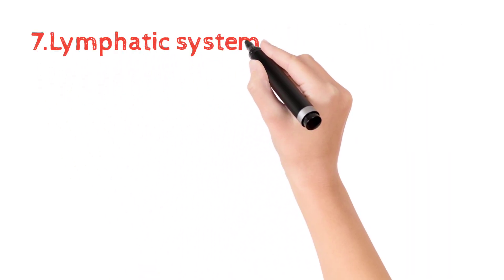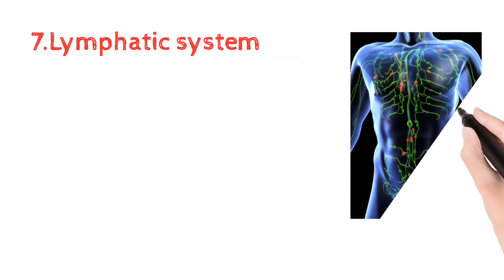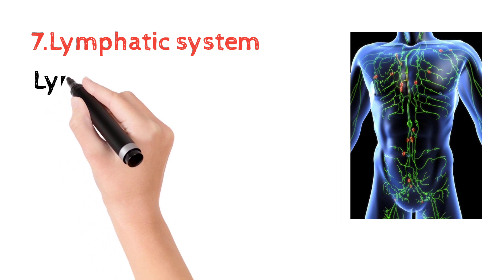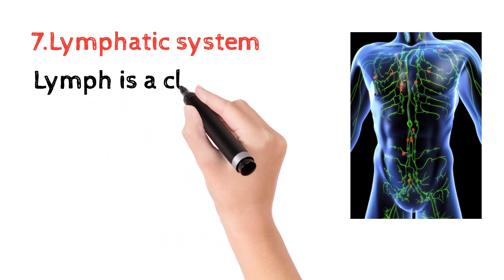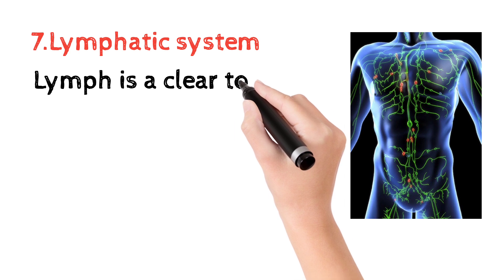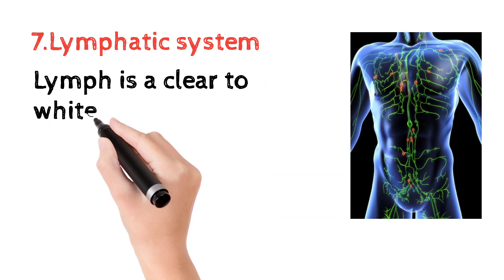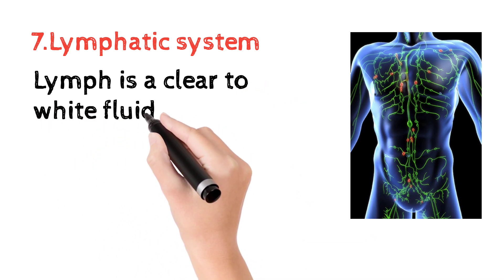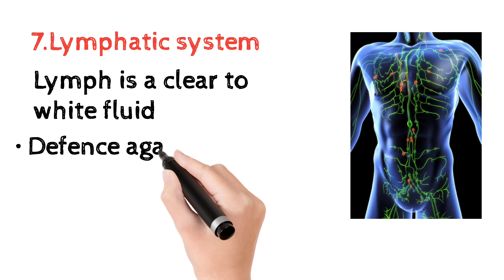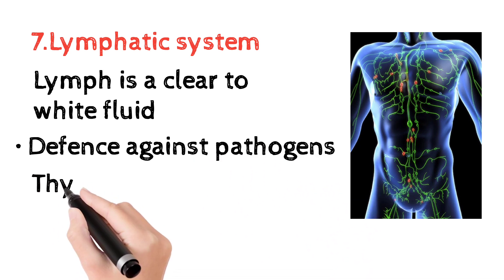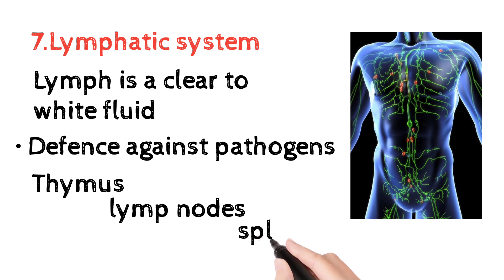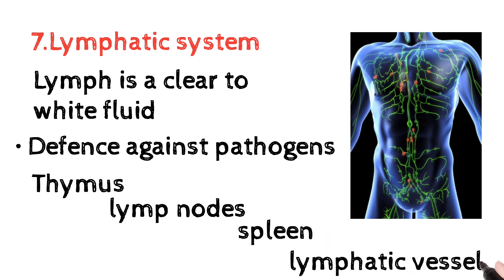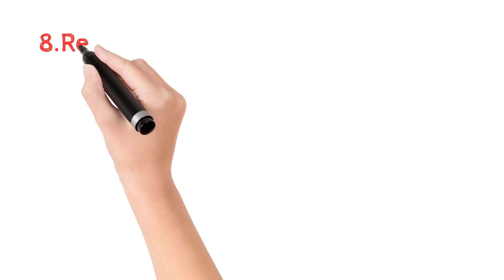Next is the lymphatic system. Lymph is a fluid that defends against pathogens. The lymphatic system works through the thymus gland, lymph nodes, spleen, and lymphatic vessels.